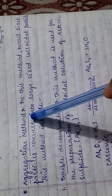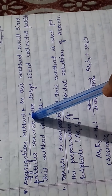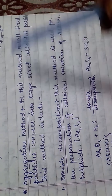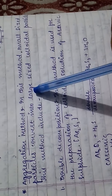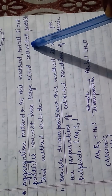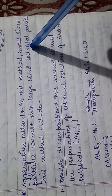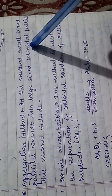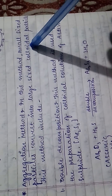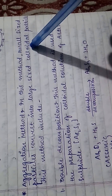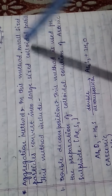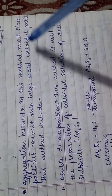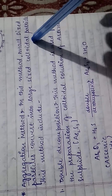Now, the aggregation method — that is our second main method to prepare colloidal solution. In this method, small-size particles are converted into large-size colloidal particles.